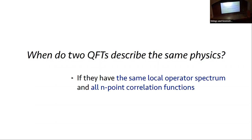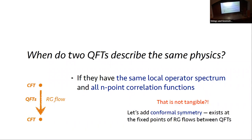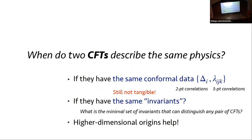It is very hard. If we have the same local operator spectrum and all endpoint correlation functions, it would take a complete categorization of all possible theories, which is impossible and definitely not tangible. So let's add symmetry as high energy theorists do. Instead of full QFTs, we go to fixed points and consider CFTs with additional conformal symmetry. What it boils down to is: can we distinguish conformal field theories, and when do two CFTs describe the same physics?